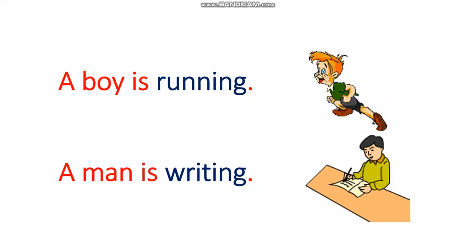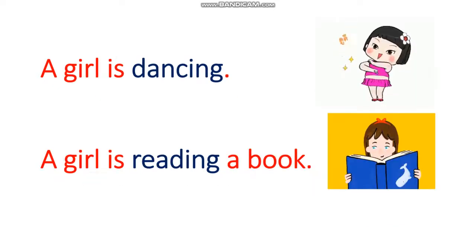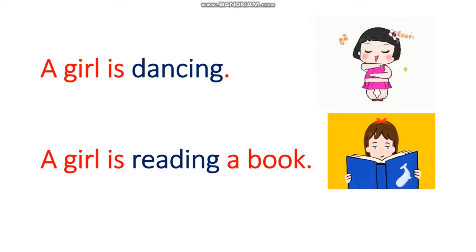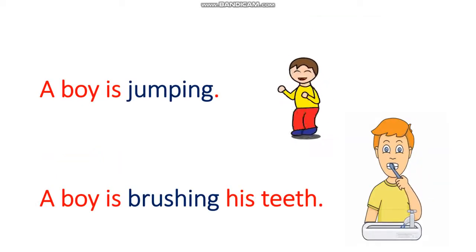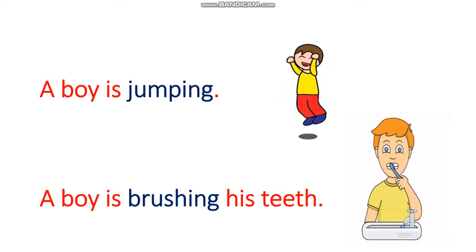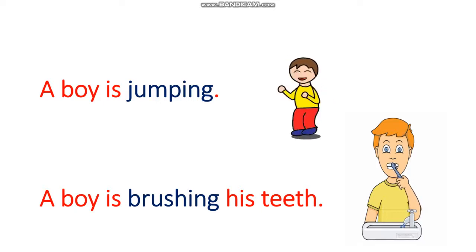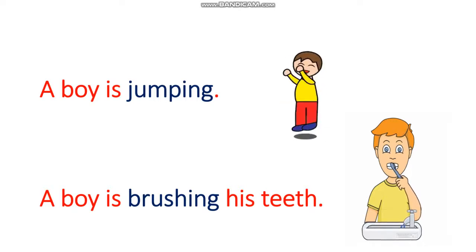A boy is running. A man is writing. A girl is dancing. A girl is reading a book. A boy is jumping. A boy is brushing his teeth. So words like running, writing, dancing, reading, jumping, brushing are telling us about the actions.